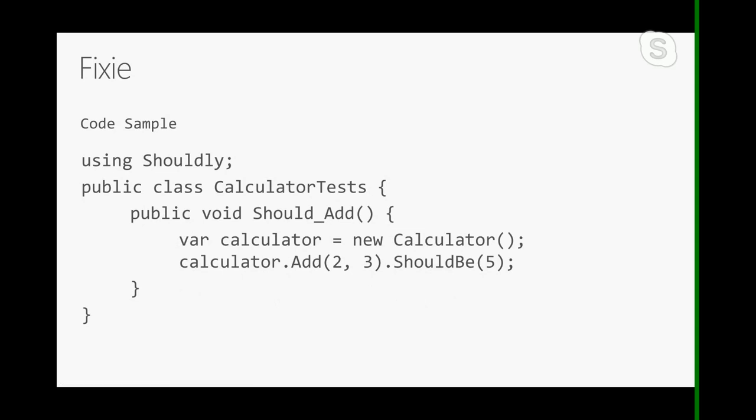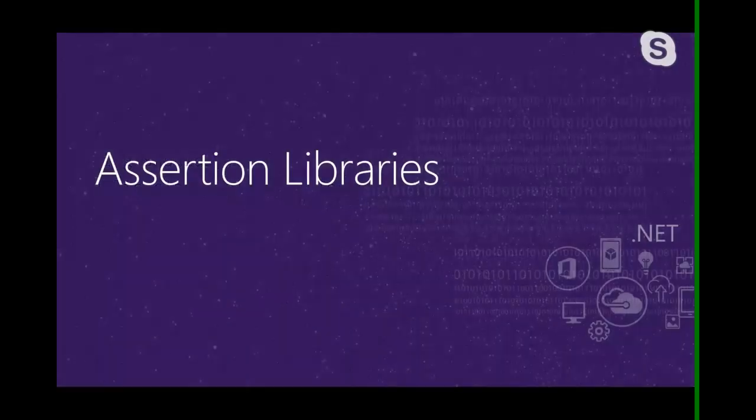Fixie doesn't come out of the box with an assertion library, so here we use Shouldly — I'll talk about Shouldly later in this presentation.